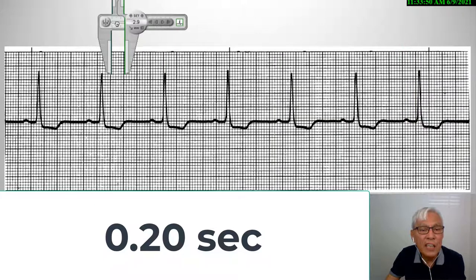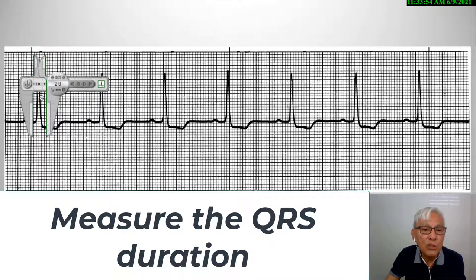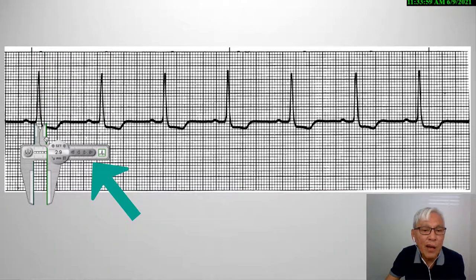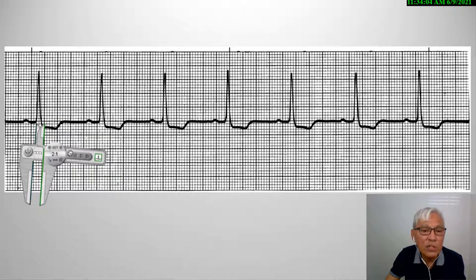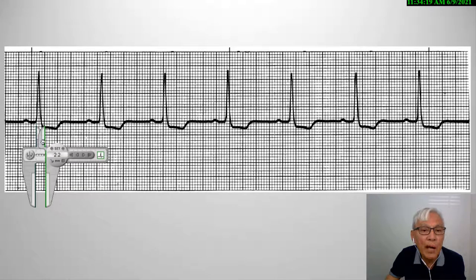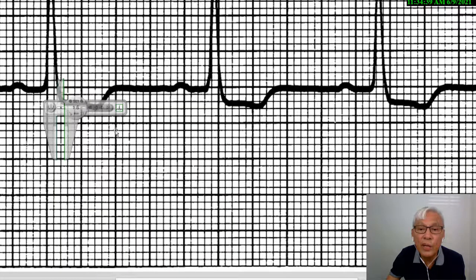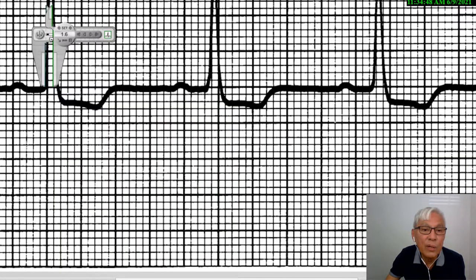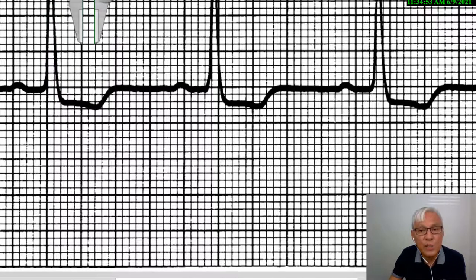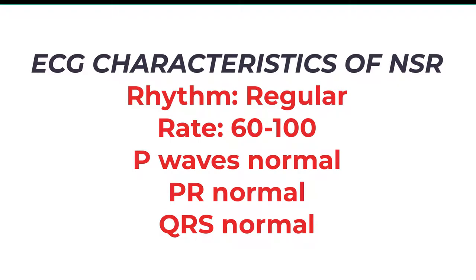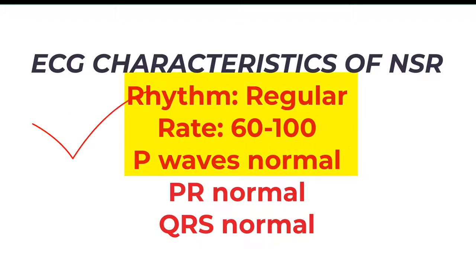The PR interval is a normal finding. The next step is to measure the QRS complex. Measuring it, that's around two boxes — 0.08 seconds — which is normal. Did it meet the criteria for normal sinus rhythm? Was the rhythm regular? Was the rate between 60 to 100? Are the P waves normal? Is the PR interval normal? Is the QRS complex normal? All criteria are met.